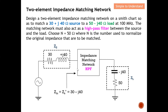The impedance matching network needs to be inserted between the source and the load. For maximum power transfer, Z_in must be the complex conjugate of Z_source. This means the imaginary part reverses sign — if the source is 30+j40, then Z_in must be 30−j40. So I need to match to Z_in rather than directly to Z_source.